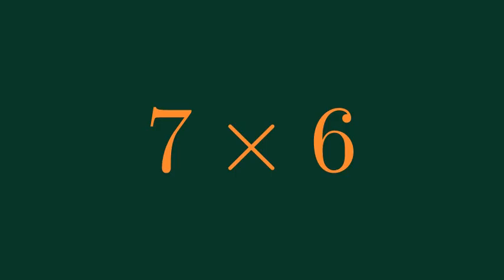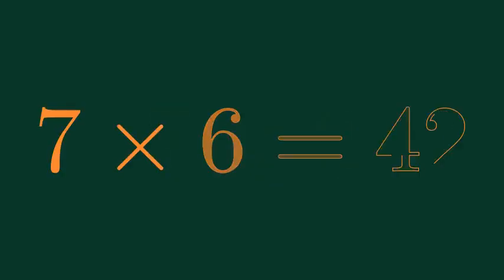What is 7 times 6? 7 times 6 is equal to 42.